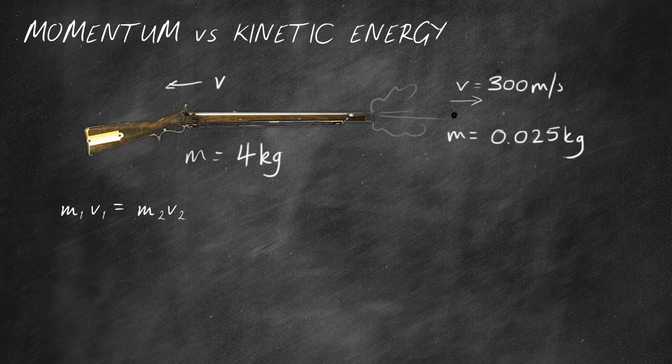I'm going to use these two as my one, the bullet data as my one. So the mass of the bullet, 0.025, times the velocity of the bullet, 300, is equal to the mass of the rifle M2, which is 4, times by the velocity the rifle is moving.